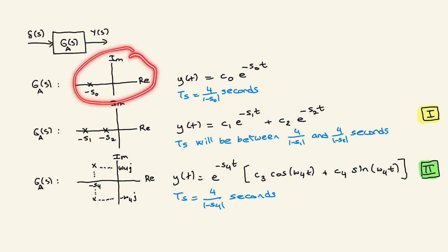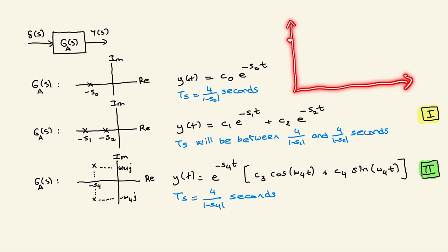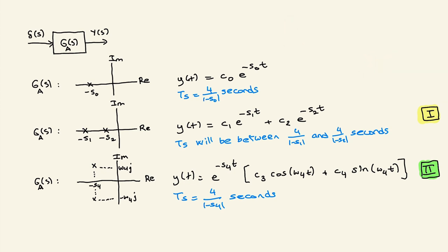Let's begin with this case: a transfer function has a pole at minus s0. Its output y will satisfy this, where c0 is a constant multiplied by e to the power of minus s0 times t. Settling time can be approximated by 4 divided by |s0| seconds. Starting from some initial condition, this solution will die out around 4 seconds if s0 equals one.